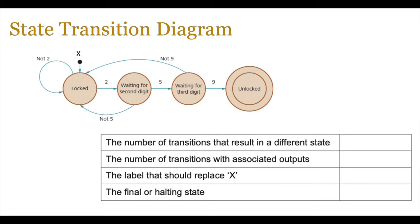A state transition diagram can be given in an exam and you are asked to answer questions based on it. For example: how many transitions result in a different state? — there are five. How many transitions have associated outputs? — the answer is zero, as there are no brackets or lines indicating output. What label should replace X? — that's your start condition. And the final holding state is the unlocked state, shown with double circles.